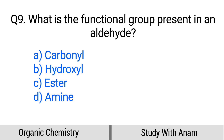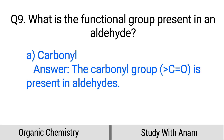Question number 9. What is the functional group present in an aldehyde? Option A: Carbonyl, B: Hydroxyl, C: Ester, D: Amine. The correct option is option A, Carbonyl. The carbonyl group (C=O) is present in aldehydes.